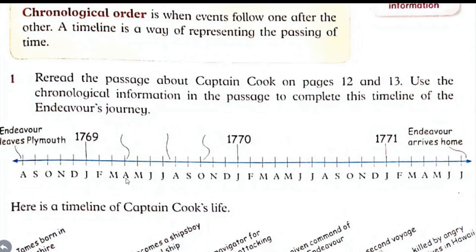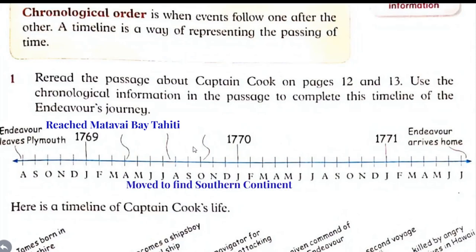So what happened in April 1769? Simply go to page 12 and read about it. You will find that they reached Matave Bay, Tahiti in April 1769. And what happened in August 1769? They moved to find the Southern Continent. And after three months, in October, they found New Zealand.